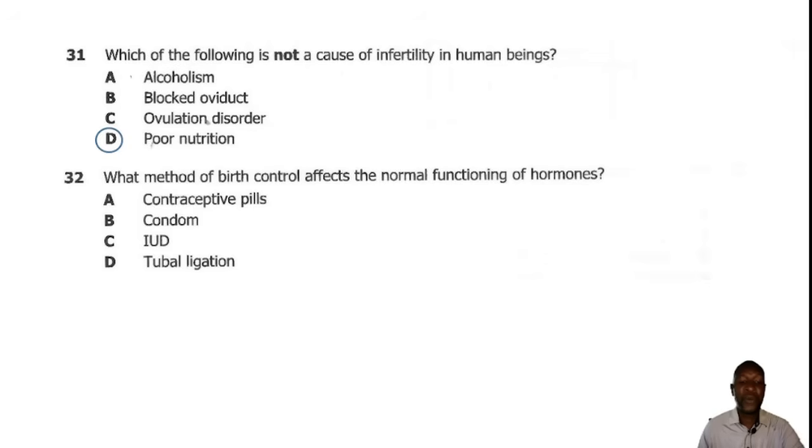Question 32. What method of birth control affects the normal function of hormones? The birth control which will actually affect the normal function of hormones is contraceptive pills, due to the presence of synthetic hormones such as progesterone. So the correct answer here is A.